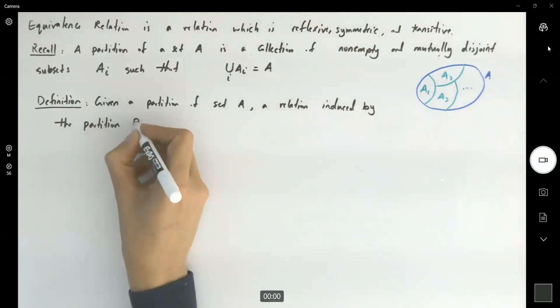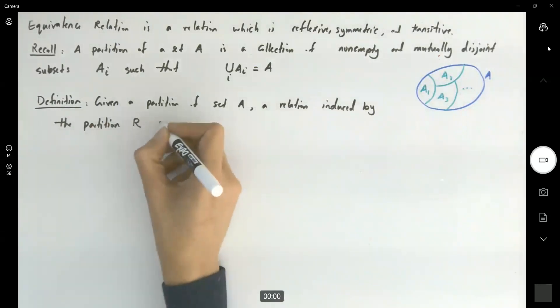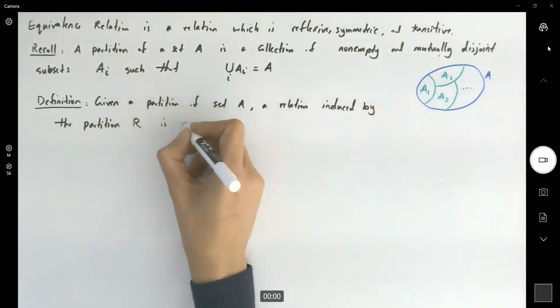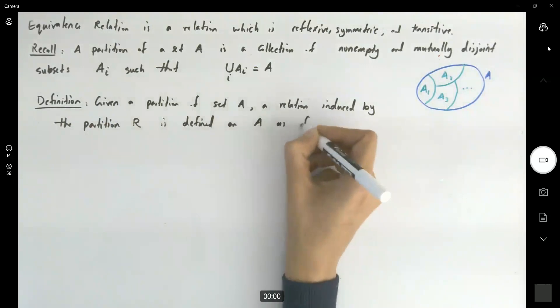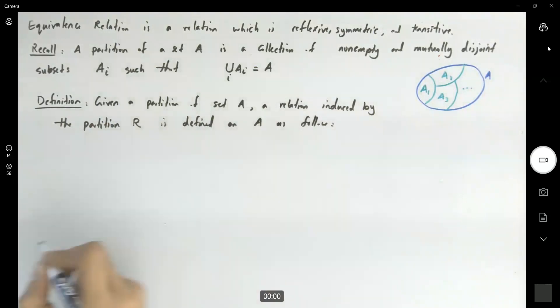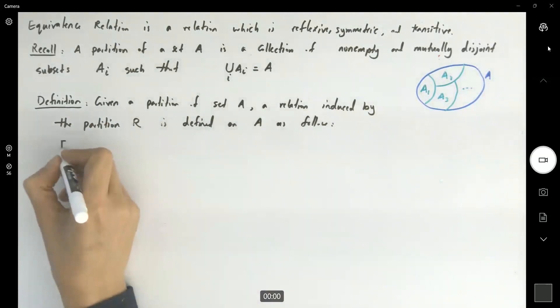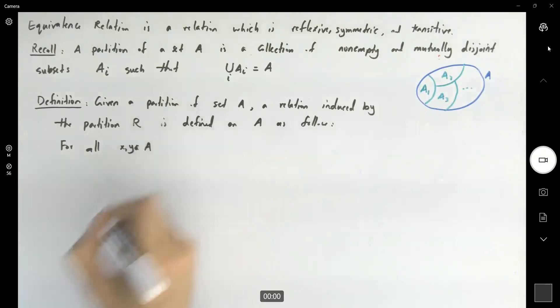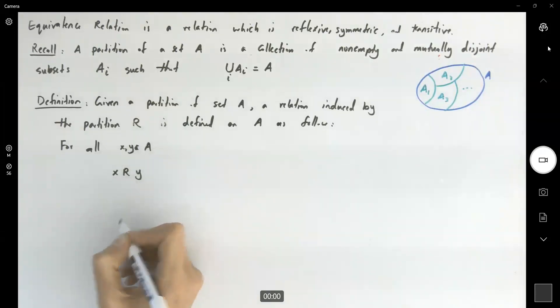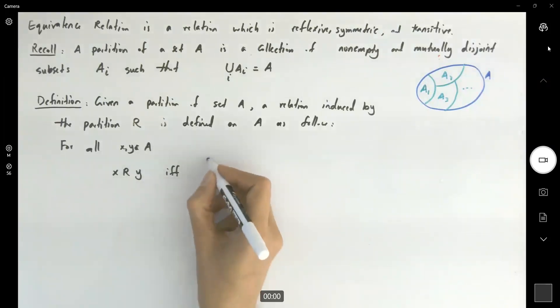Like R is defined on A as follows. We say that for all X and Y's in set A.